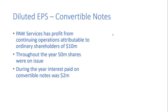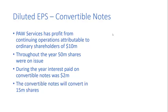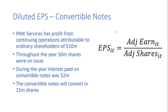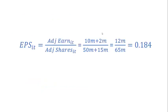In addition, it had a convertible note, and during that year that convertible note had interest paid of $2 million, and the convertible notes would convert into 15 million shares. This is going to change the earnings and the shares used in the EPS calculation. We have to adjust the earnings number for the impact of exercising the convertible notes. The interest won't be payable if we convert the notes, so earnings goes up by $2 million.